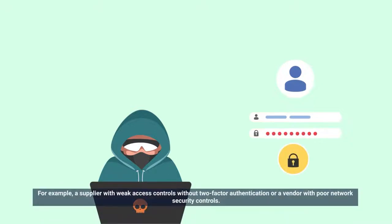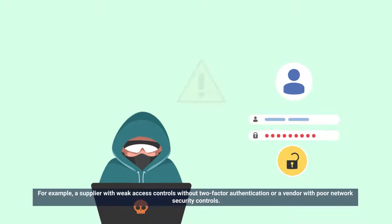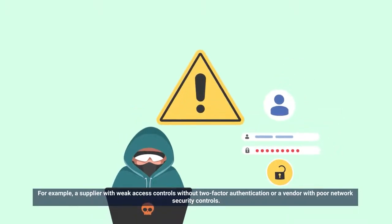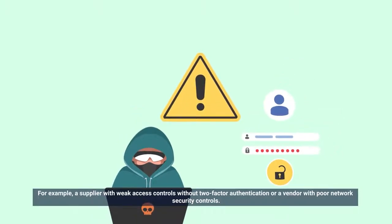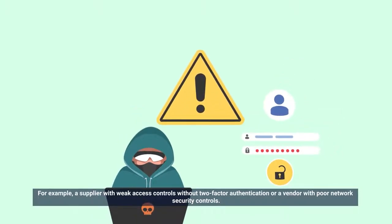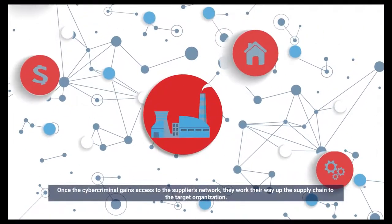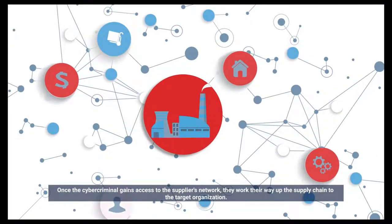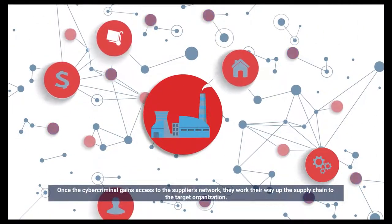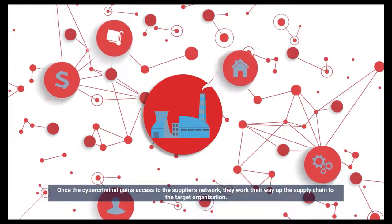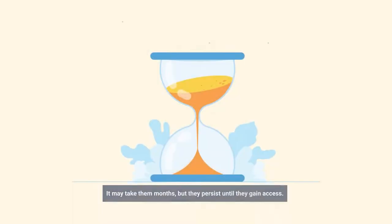For example, a supplier with weak access controls without two-factor authentication, or a vendor with poor network security controls. Once the cybercriminal gains access to the supplier's network, they work their way up the supply chain to the target organization. It may take them months, but they persist until they gain access.